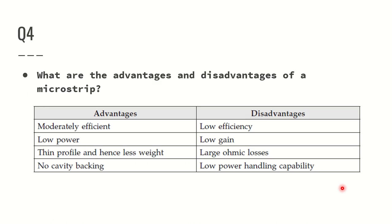What are the advantages and disadvantages of microstrip antennas? On the advantages side, it is inexpensive and moderately efficient. On the disadvantage side, it has low efficiency in that it does not fully meet expectations, it is a low power device, and it has low gain. On the positive side, it is lightweight and very thin. However, it has large ohmic losses, no cavity backing, and low power handling capability. These are the key advantages and disadvantages of microstrip antennas.